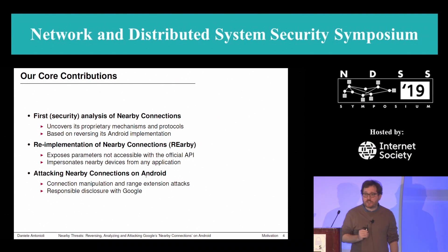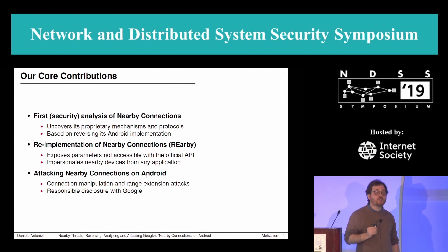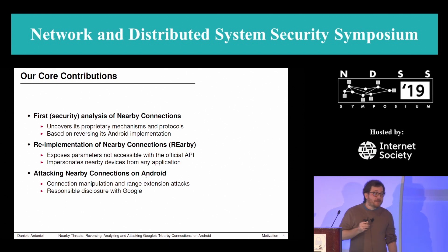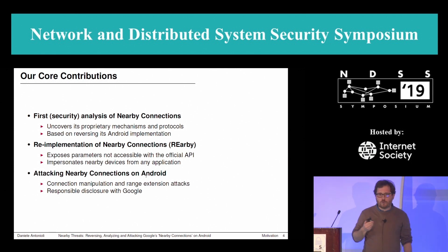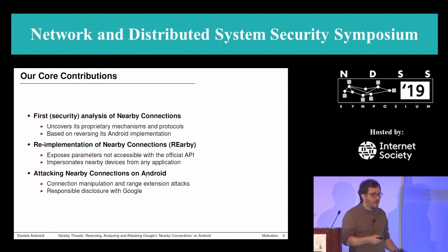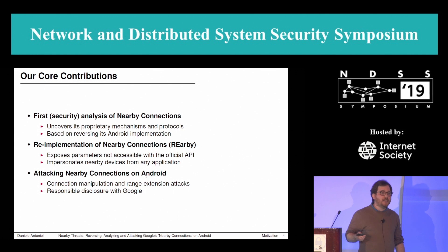The core contribution of our work is the first security analysis of Nearby Connections. In our analysis, we uncover the proprietary mechanisms and protocol of the API, based on reverse engineering of its Android implementation. We were also able to implement Nearby Connections in a toolkit that we call Rearby. Rearby exposes low-layer parameters not available through the public API provided by Google, and we use it to impersonate any Nearby Connections device from any Android application.